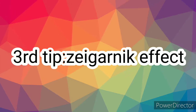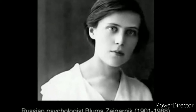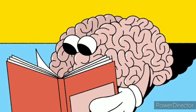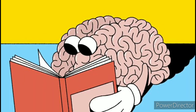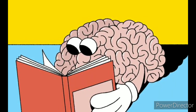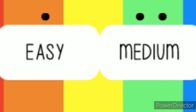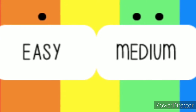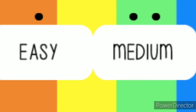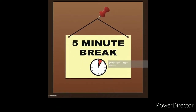Third tip: Zeigarnik effect. This effect was named after Soviet psychologist Bluma Zeigarnik. This effect occurs when an activity that has been interrupted may be more readily recalled. We remember unfinished tasks better than finished tasks. So while studying, divide your subjects into medium and easy subjects. Start with your medium subjects, then take a 5-minute break and revise the easy subjects. This will help you remember both.